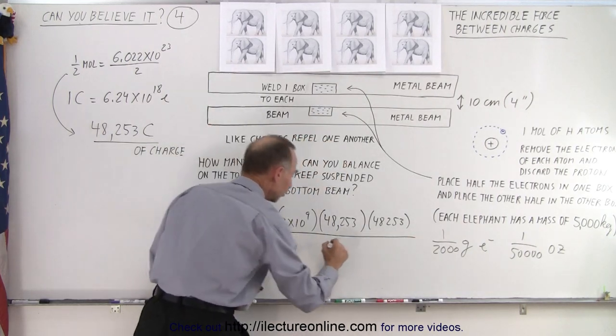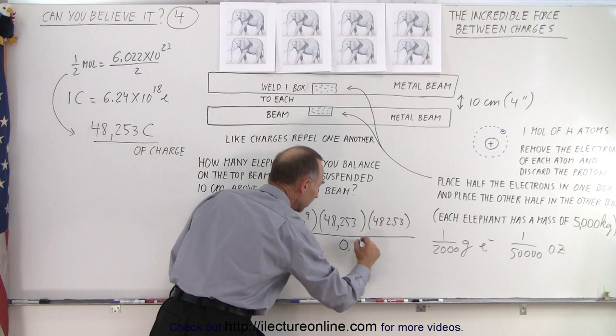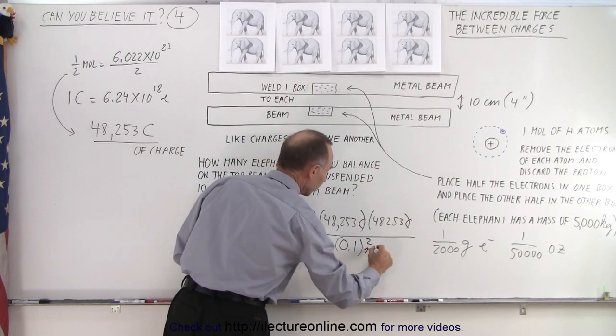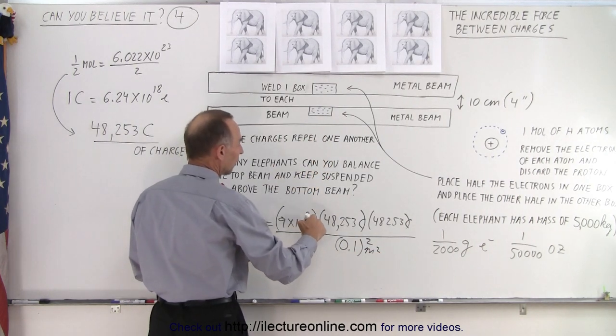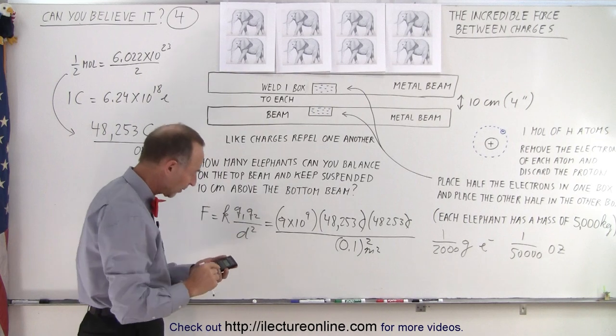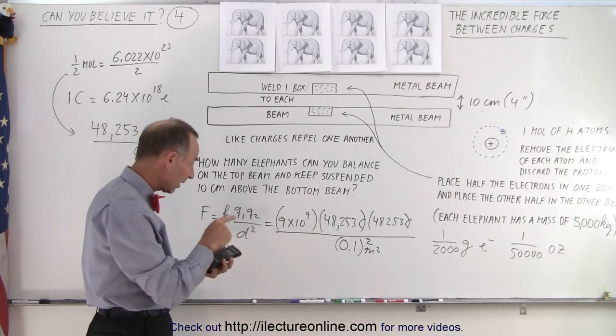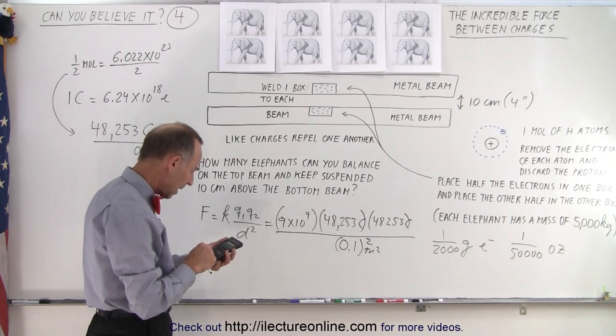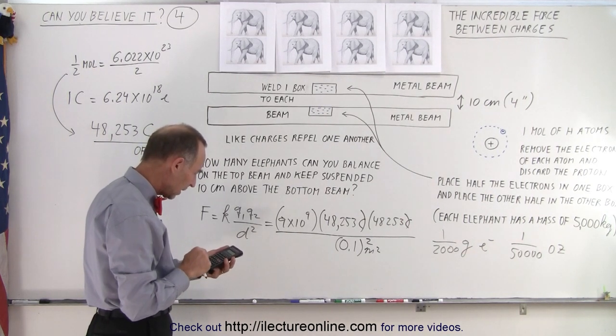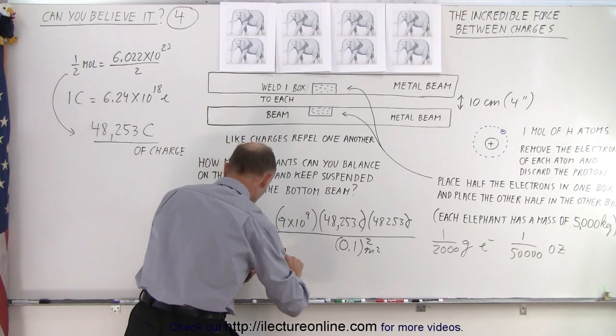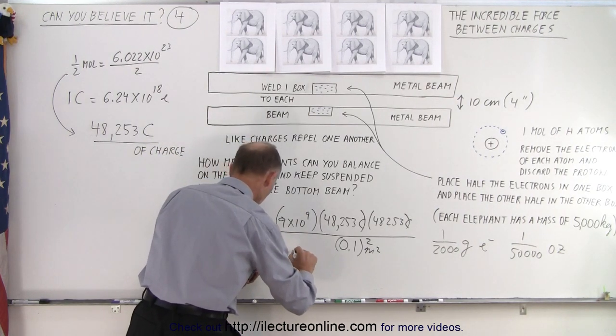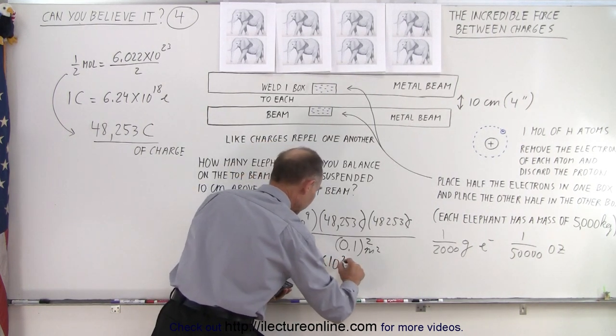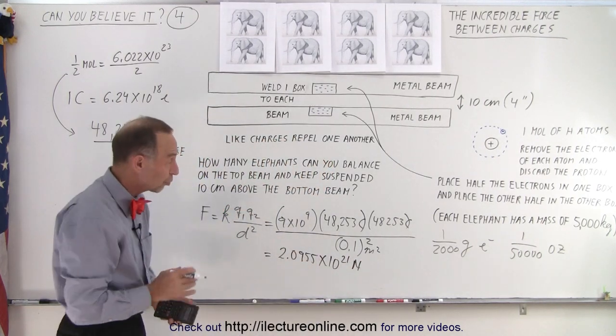Divide that by the distance between them squared, which is 0.1 meter, and we square that. So this is in coulombs, this is in meters, meters squared, and this is in newtons meters squared per coulomb squared. Now, when we work all that out, what do we get? We're going to square that number, times 9e to the ninth, and divide by 0.01. And that gives me 2.0955 times 10 to the 21st newtons. So that would be the force between the two beams.